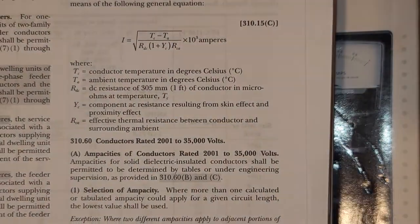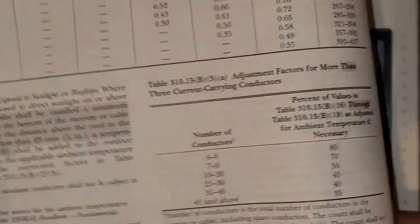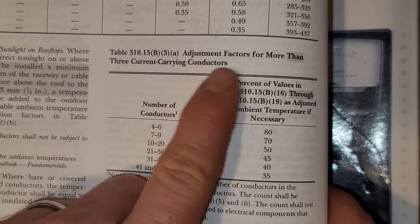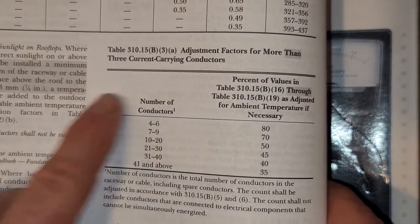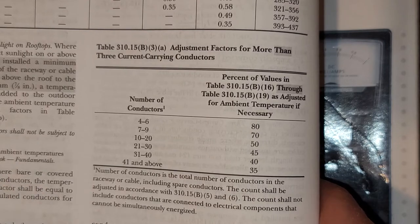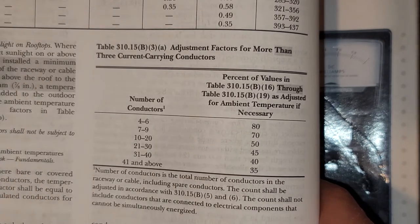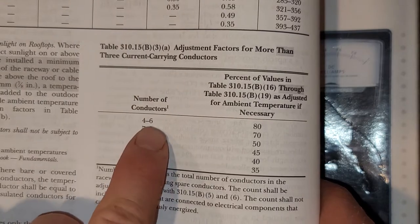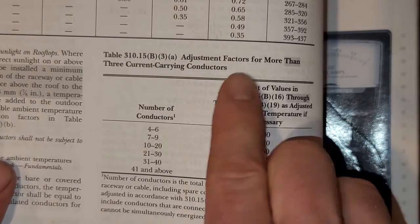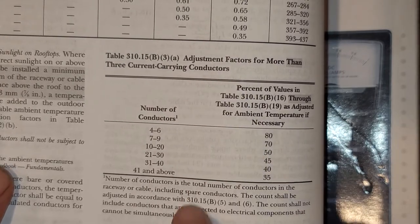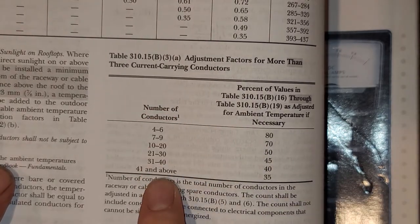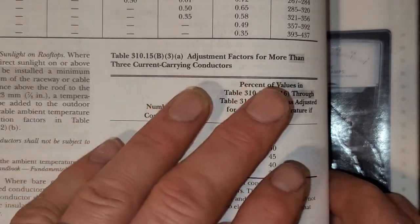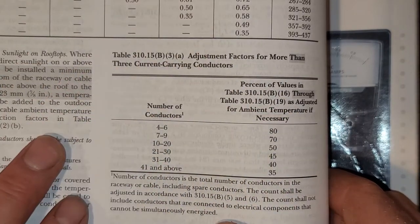The next one is another favorite — adjustment factors for more than three current-carrying conductors. When you have more than three current-carrying conductors in the pipe, you have to adjust the ampacity because of heat dissipation from the current being carried. On the left-hand side is the number of current-carrying conductors; on the right-hand side is the percentage you'll apply as your demand factor.